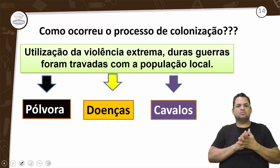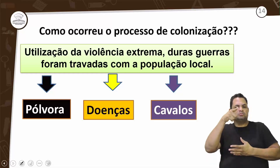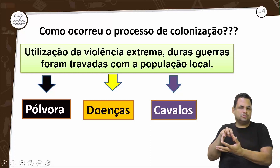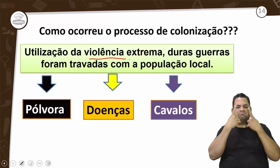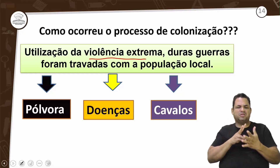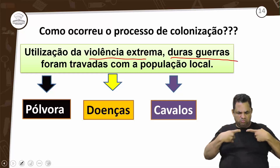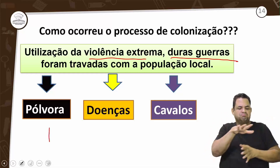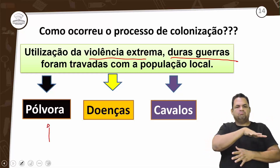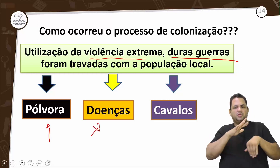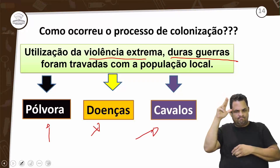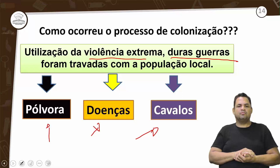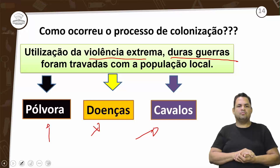Os espanhóis conseguiram fazer um processo de colonização pela utilização da violência extrema; duras guerras foram travadas com a população local. Pólvora, doença e cavalo foram os instrumentos desse processo.